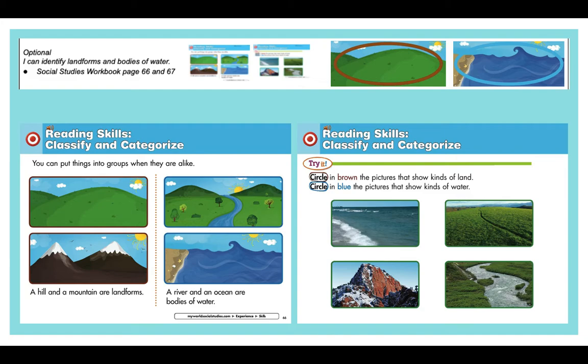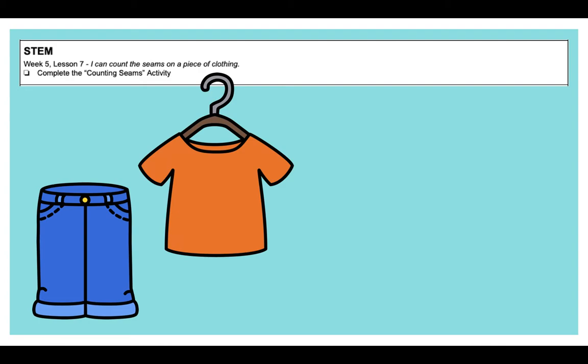Brown for land, blue for water. If you see land and water in one picture, you could use both colors. So circle the land in brown and the water in blue. All right? So that's your social studies lesson, Kinder Friends. Now let's move on to STEM. Let's see what Miss Life has for us this week.